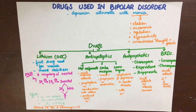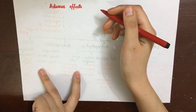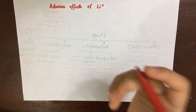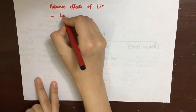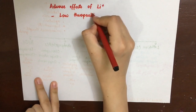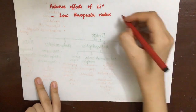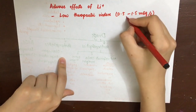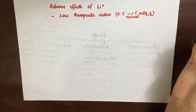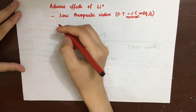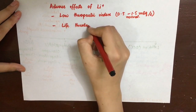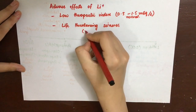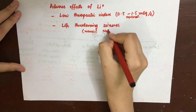Regarding adverse effects of lithium, it has a very low therapeutic index, hence therapeutic drug monitoring must be done for optimal therapy. Normal blood levels should be between 0.5 to 1.5 milliequivalents per liter. Another important point is that lithium resembles sodium in size and charge, and thus can lead to spontaneous depolarization of the neuronal membrane by entering the membrane, causing life-threatening seizures.